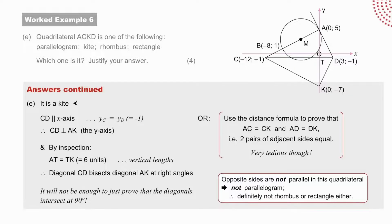It would not have been enough to just prove that the diagonals intersected at 90 degrees. An alternative was to use the distance formula to prove two pairs of adjacent sides equal. Very tedious, though. Opposite sides of this quadrilateral are not parallel, and therefore it is not a parallelogram. And definitely, therefore, not a rhombus nor a rectangle.